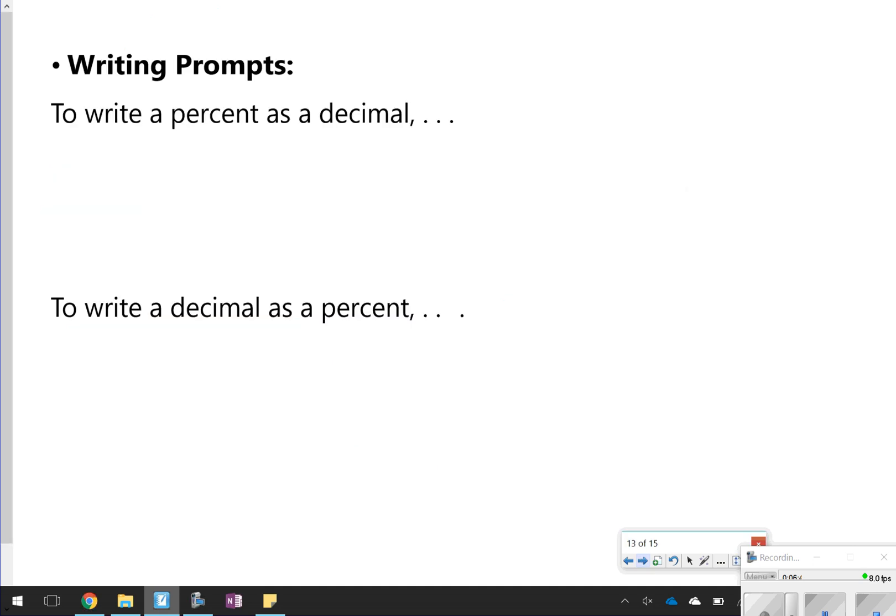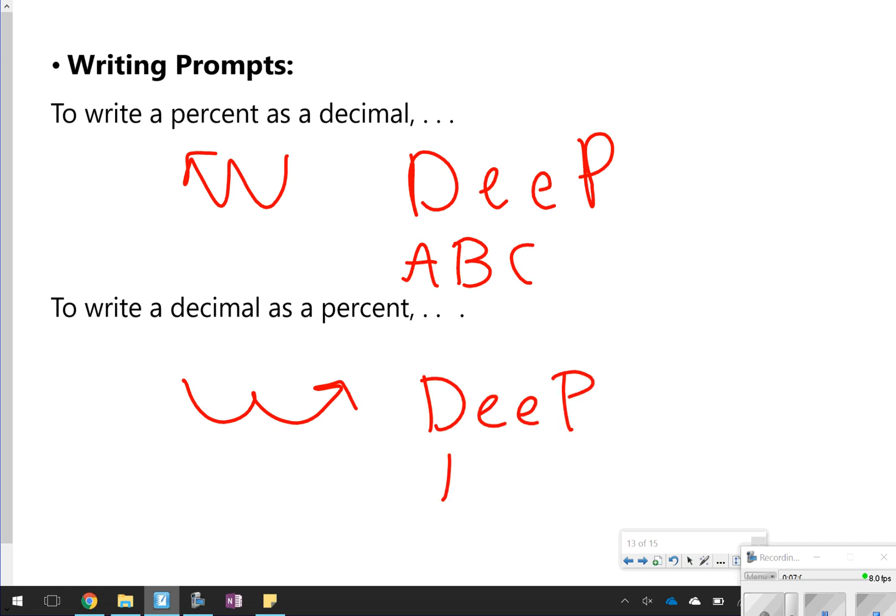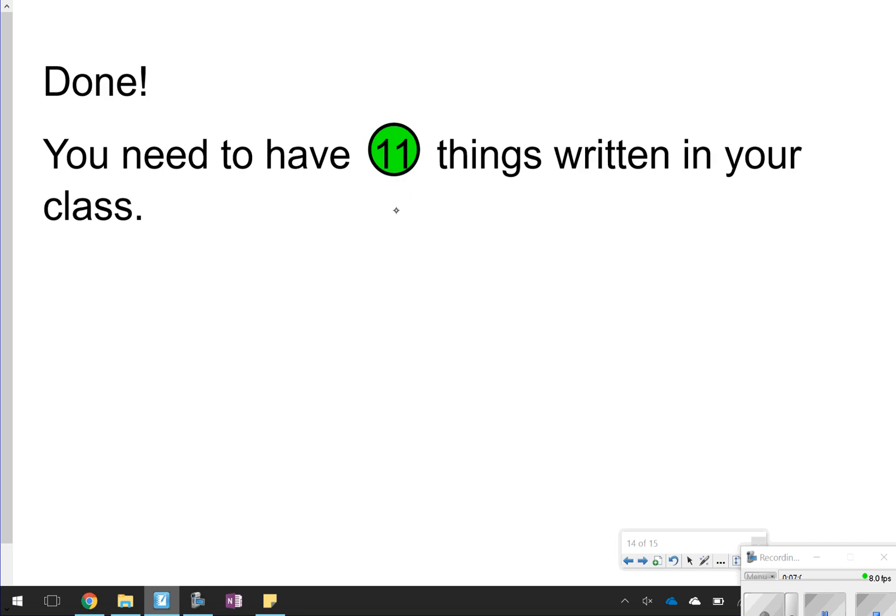And just make sure that you understand before we end this video, writing percents as a decimal, you can always move it two times to the left, or think of the word DeeP or the alphabet. And then decimals as percents are going two times to the right, also using the keyword DeeP or the alphabet. That is going to conclude our notes for today. Just make sure you have those 11 things done. It wasn't that difficult. And just go ahead and check in to see what you're up to next.